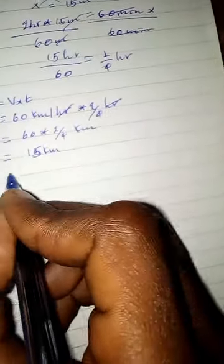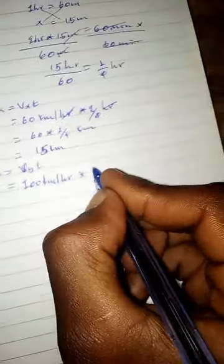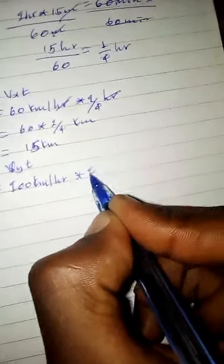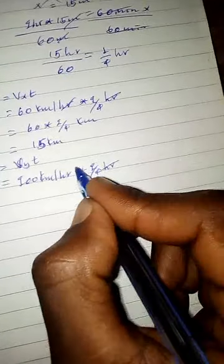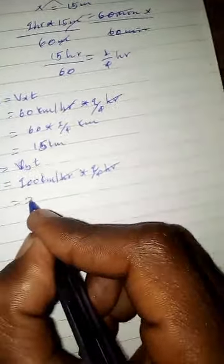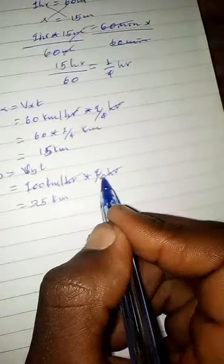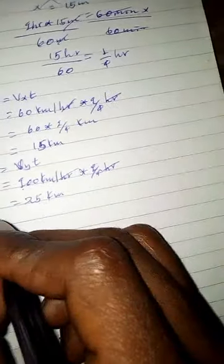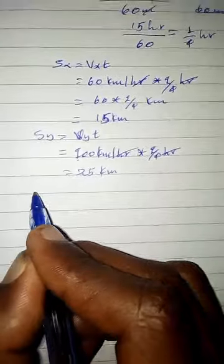For the y-direction, S of y equals velocity times time: 100 km per hour times 1/4 hour equals 25 km.